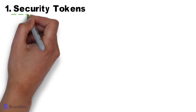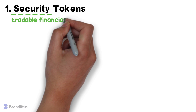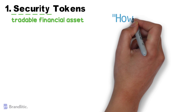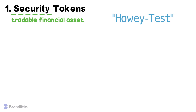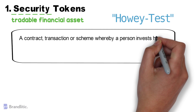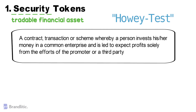Number one: Security Token. By security, we mean it as a tradable financial asset. The Howey test is used to help us tell if an asset is a security or not. As per the US Security Act, a security can be defined as a contract, transaction, or scheme whereby a person invests his or her money in a common enterprise and is led to expect profits solely by the efforts of the promoter or third party.